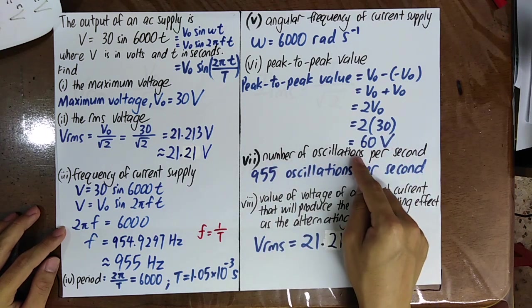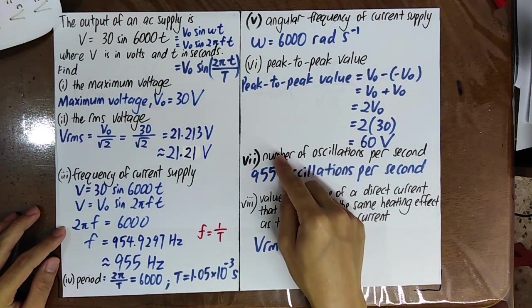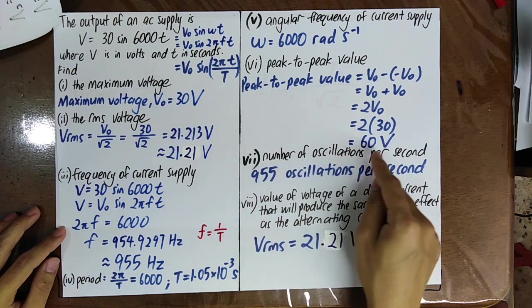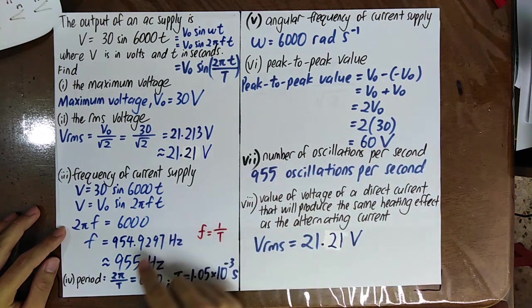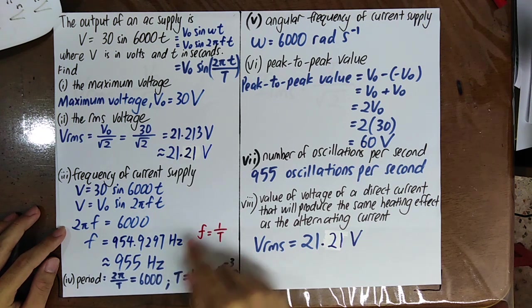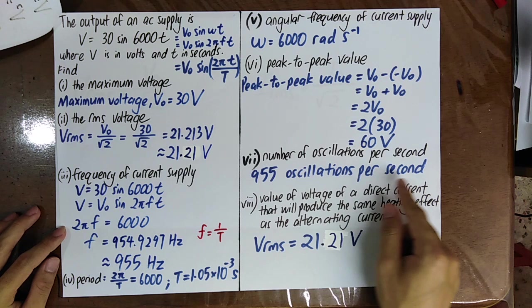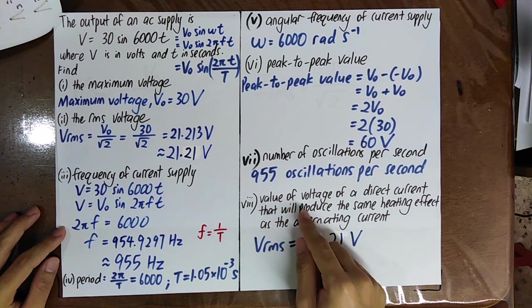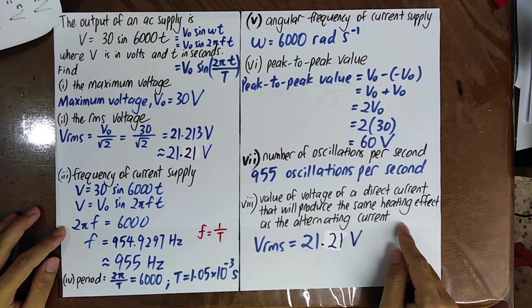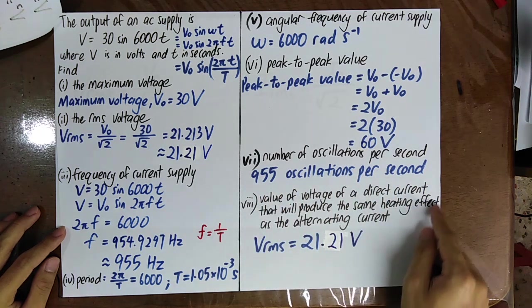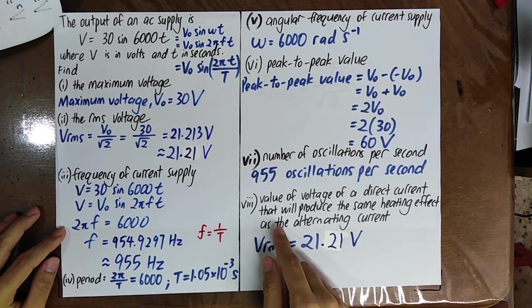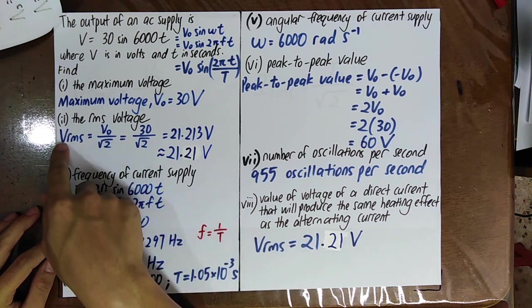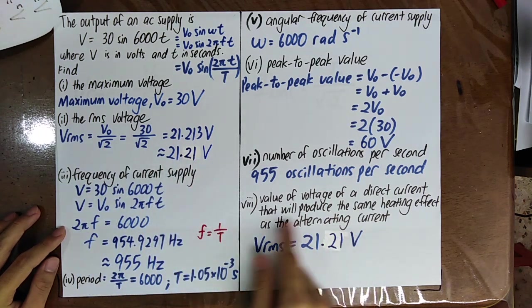The number of oscillations per second equals the frequency, which is 955 Hz, so there are 955 oscillations per second. Finally, the value of a direct current voltage that produces the same heating effect as this alternating current — this is exactly the definition of root mean square voltage — so the answer is Vrms = 21.21 V.